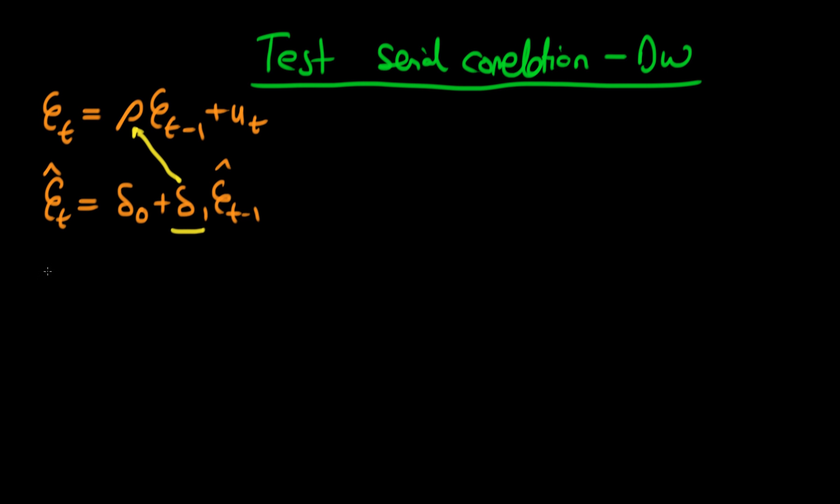So our null hypothesis here was that rho is equal to naught, in other words that we have no serial correlation, and our alternative hypothesis here was that rho does not equal naught. And we did that by means of a t-test.